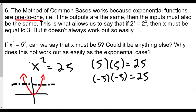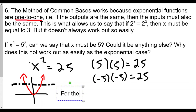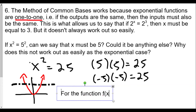So x squared is not a one-to-one function. One-to-one means that each x has only one y value and each y value has only one x value. Although each x value does have only one y value for x squared, not every y value has only one x value.